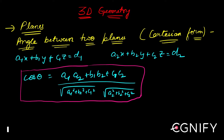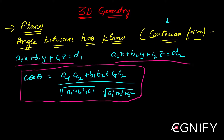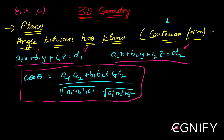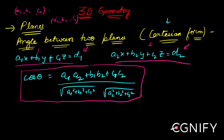Let us now look at the Cartesian form of the same thing. We have two planes whose equations are given — these are the equations of the planes in Cartesian form. The concept remains the same: if I need the angle between these two planes, I need the angle between their normals. The direction ratios of the normal to the first plane are a1, b1, c1, and the DRs of the normal to the second plane are a2, b2, c2.